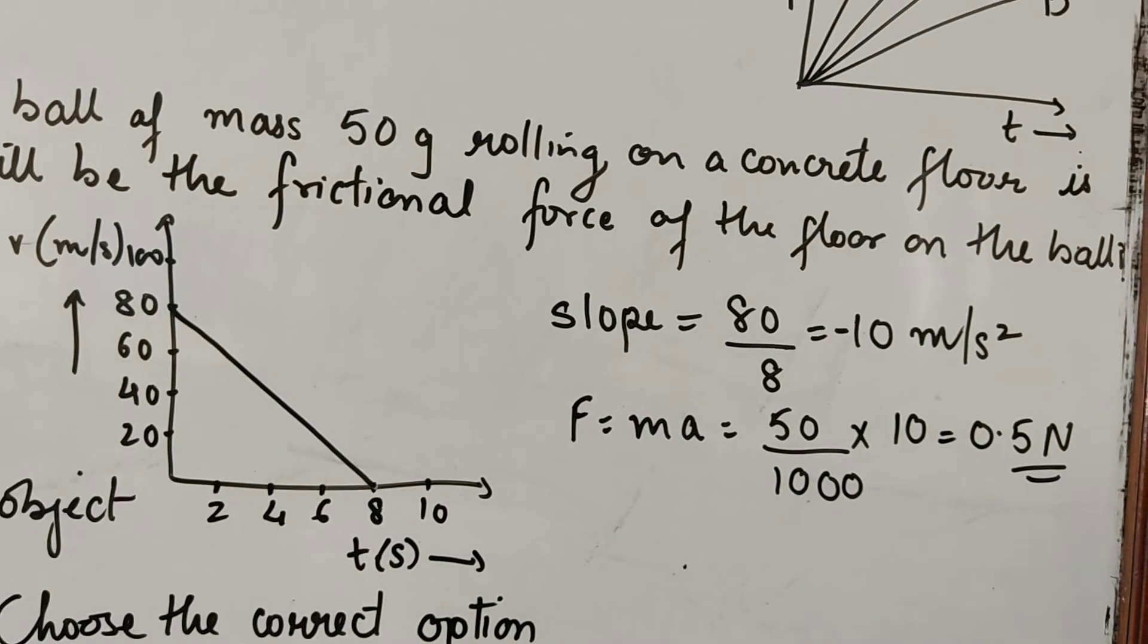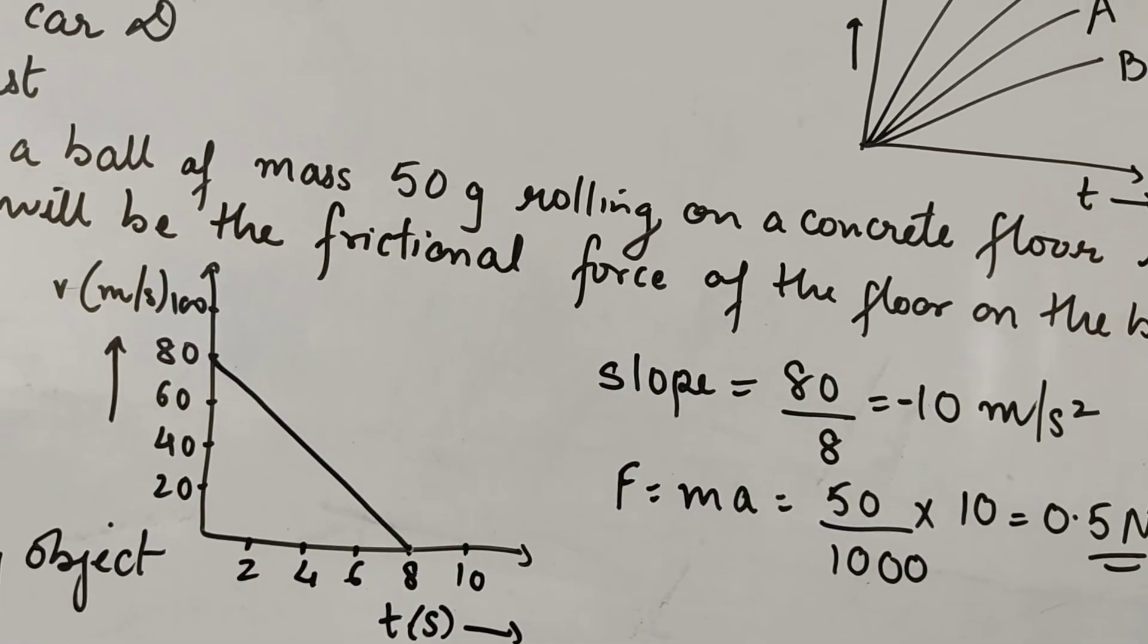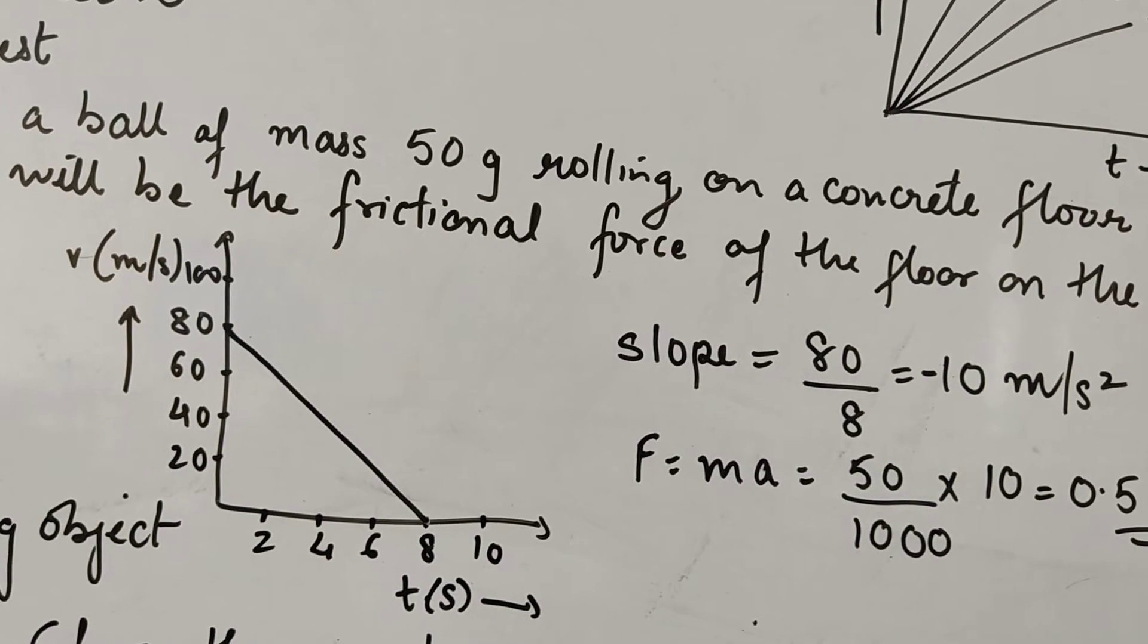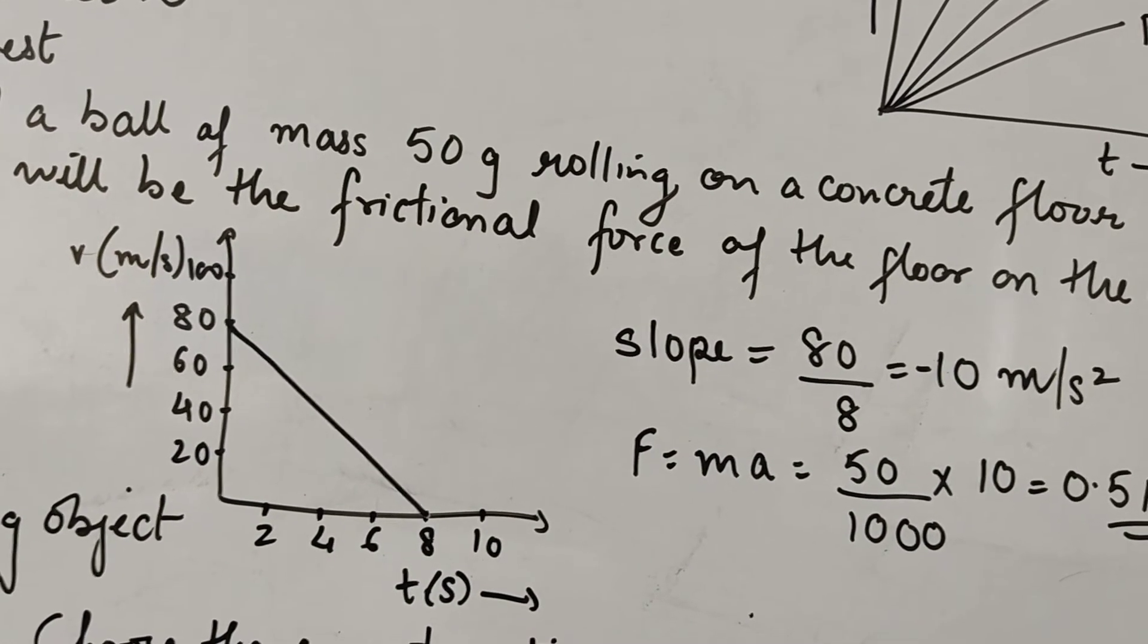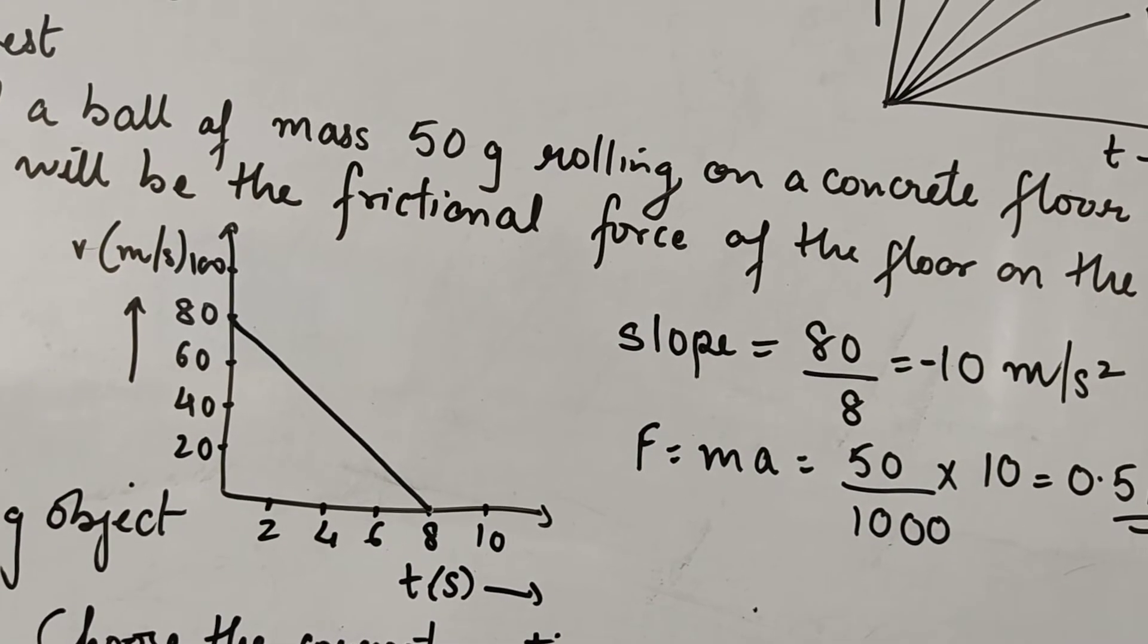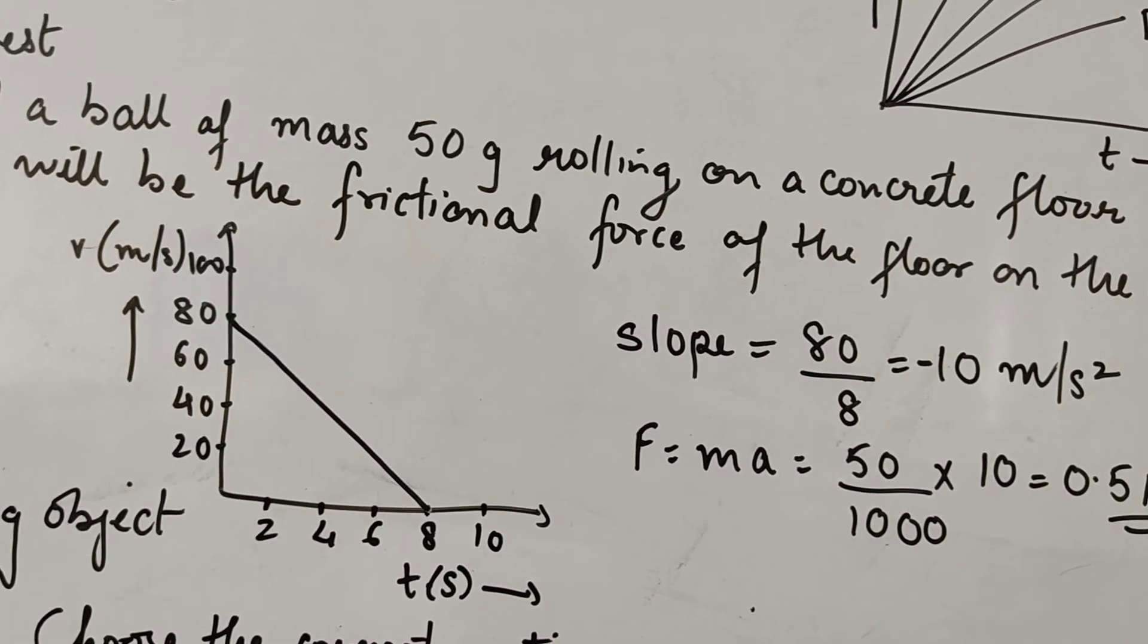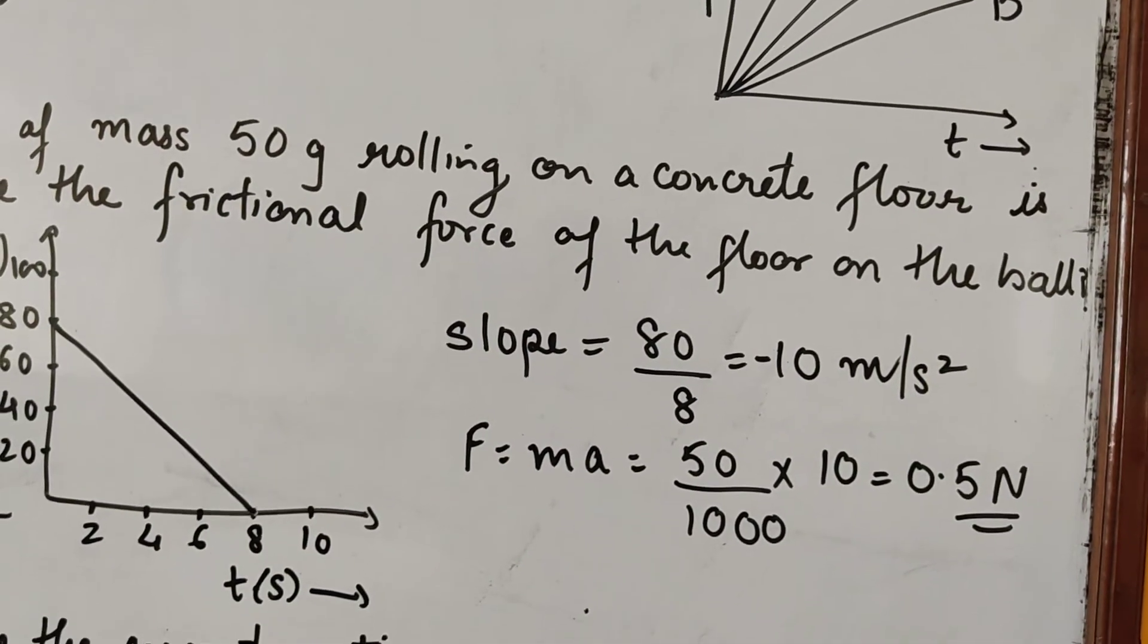So frictional force is responsible for this change in velocity or for this retardation produced. So frictional force, we know the formula from Newton's second law, F is equal to ma. Mass is 50 gram. Acceleration - now we know that slope of VT graph gives acceleration. So VT graph, what is the slope here?